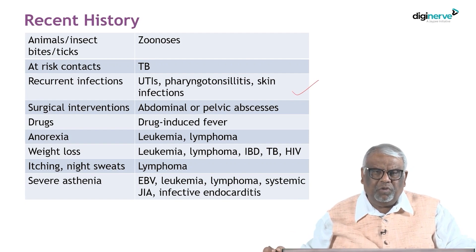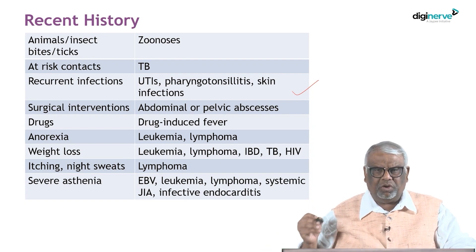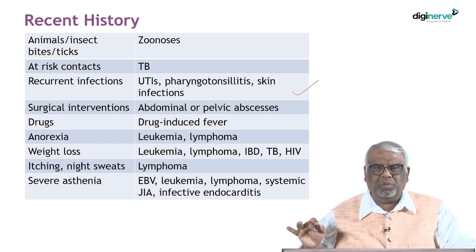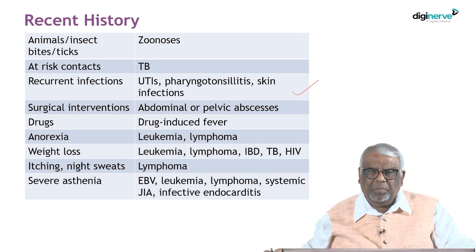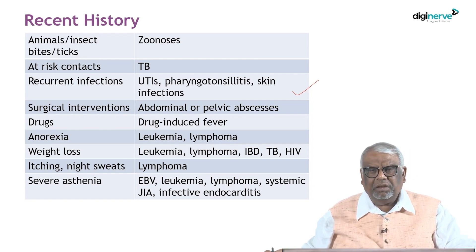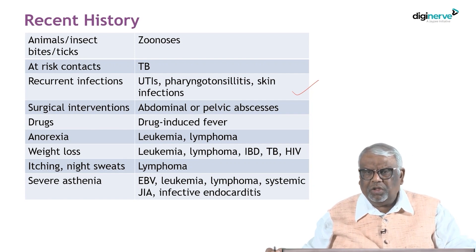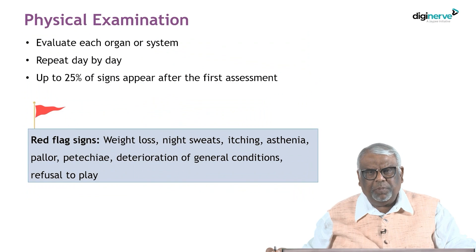Ask about recurrent infections such as UTIs, pharyngitis, and skin infections. Also ask about any surgical interventions and drug history. Anorexia, weight loss, or night sweats should typically prompt thinking about malignancy — most commonly lymphoma and other hematological malignancies. Severe weight loss and thinness can also point to systemic juvenile idiopathic arthritis.